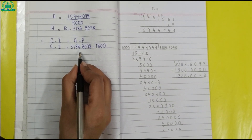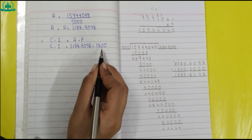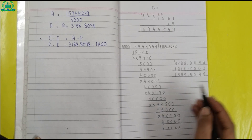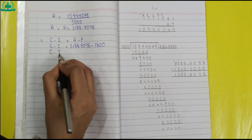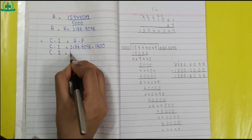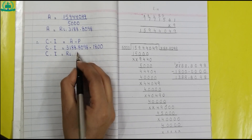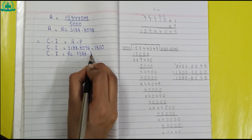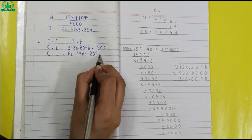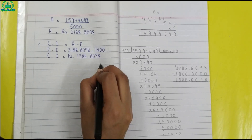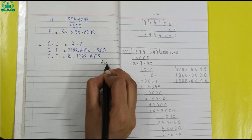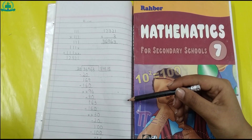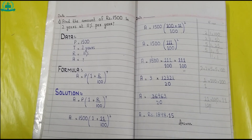3188.8098 minus 1800 equals 1388.8098. So compound interest equals rupees 1388.8098.